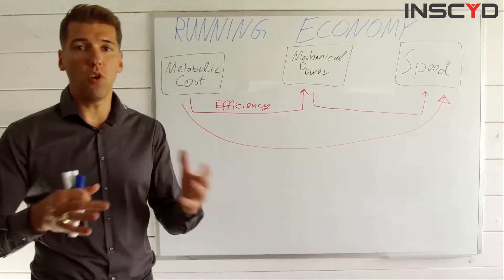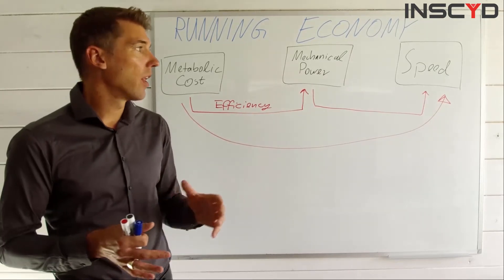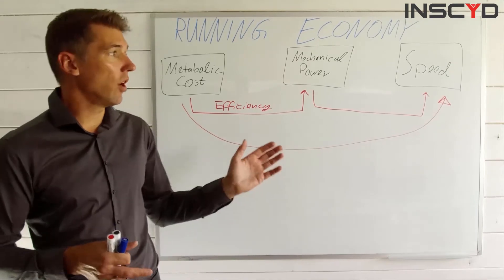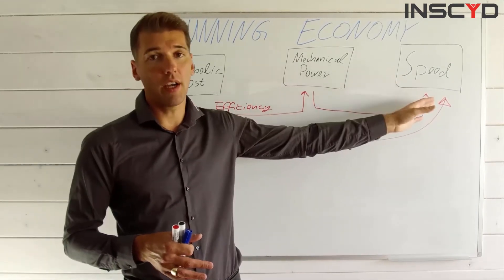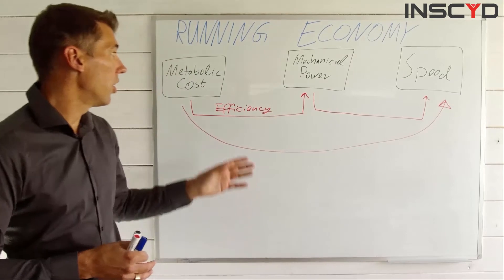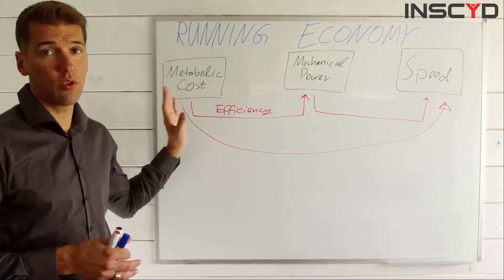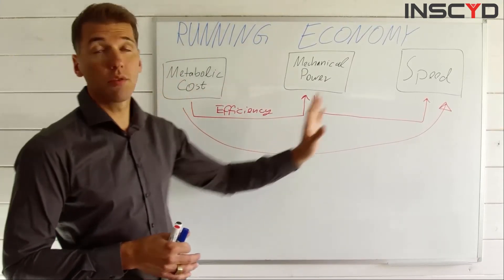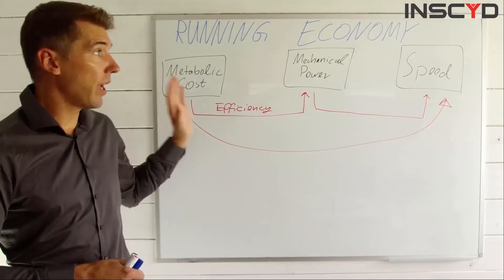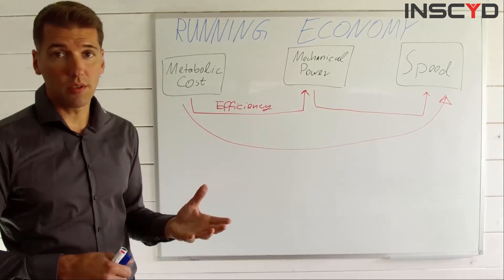In contrast, in running and swimming you can move your limbs in all three dimensions. You could move in any direction, and that's not necessarily resulting in a higher running speed in the forward direction. You could have metabolic cost attached to movements that don't result in gaining speed. This is basically what running economy is.